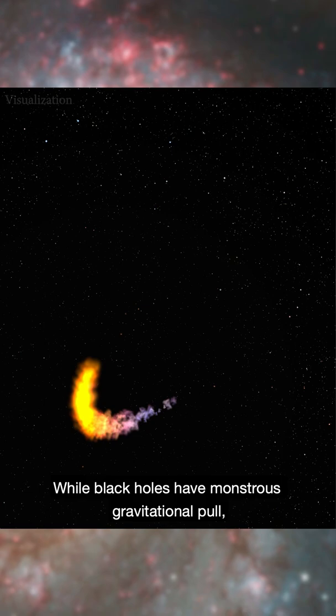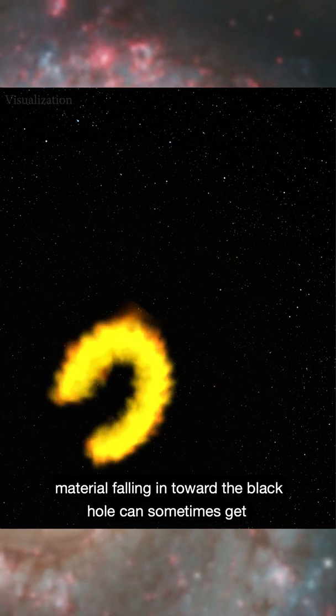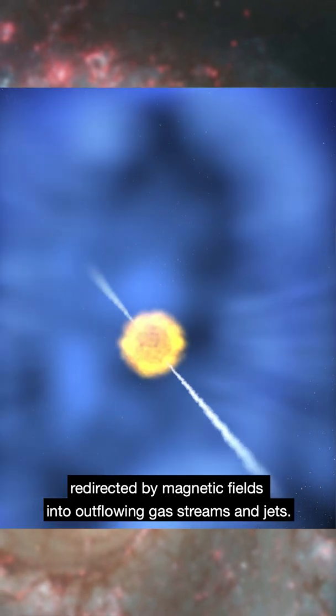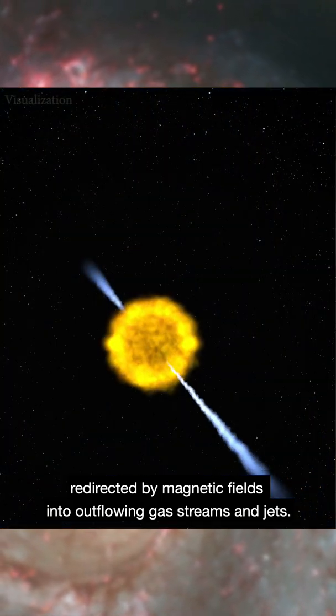While black holes have monstrous gravitational pull, material falling in toward the black hole can sometimes get redirected by magnetic fields into outflowing gas streams and jets.